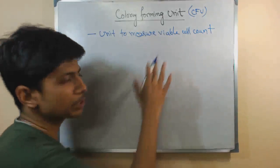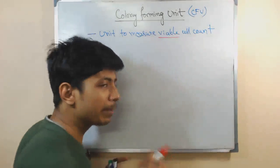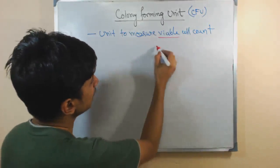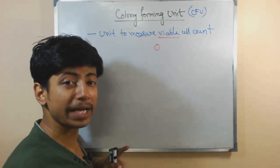So this is a unit to measure the viable cell count. When I say viable, what it means is the cell which is in active cell division using binary fission.